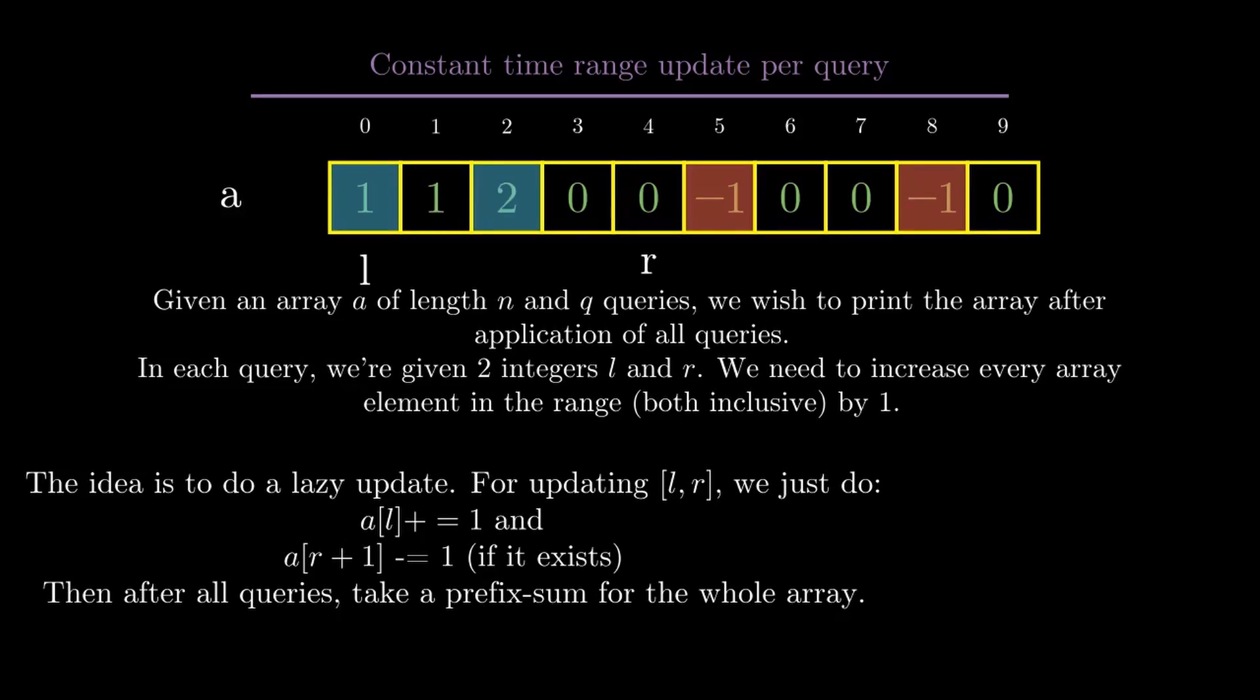Then after all the queries are done, we take a prefix sum for the whole array. The reason why this works is: when we take a prefix sum and increment a[l] by one, then every element from l to the end of the array will be incremented by one at the end. But we only meant to increment up to r, so we decrement a[r+1] by one.